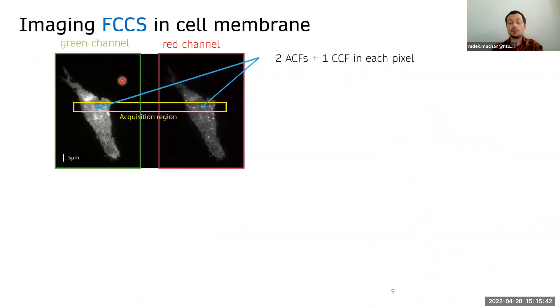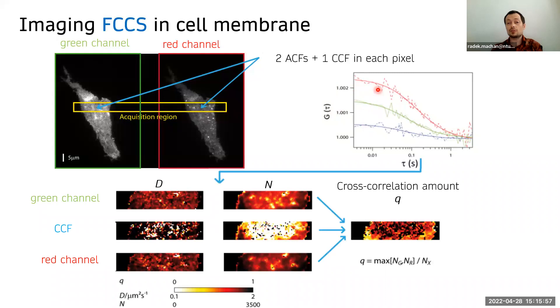This is how we do it in imaging FCCS format. So we take the images using an image splitter captured by a single camera. And then the corresponding pixels in the two channels will give us two autocorrelation functions and a cross correlation function. And then we get diffusion correlation maps,